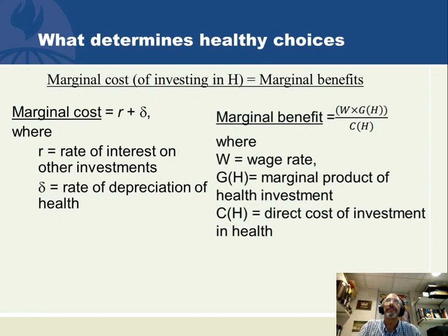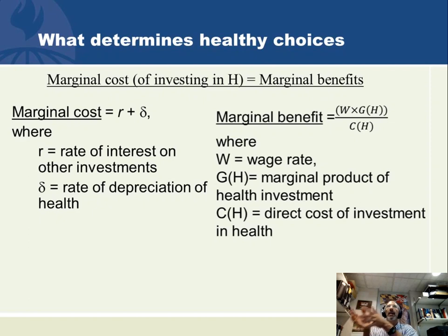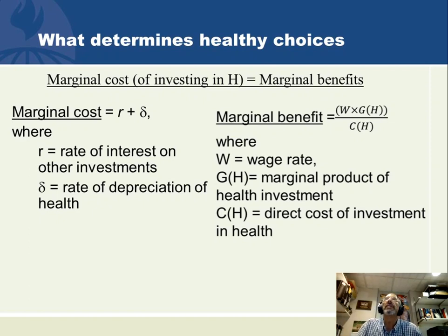The marginal benefit of my body's health is the wage rate times the marginal product of the health investment on my wage. g of h is how much extra wages I get — the bump up on my wage because my body is healthy, the marginal benefit of a unit of health on making me more productive in my job. The denominator c of h is how much money it takes to actually transform money into a standard unit of my body's health capital. So the marginal benefit is w times g of h divided by c of h.